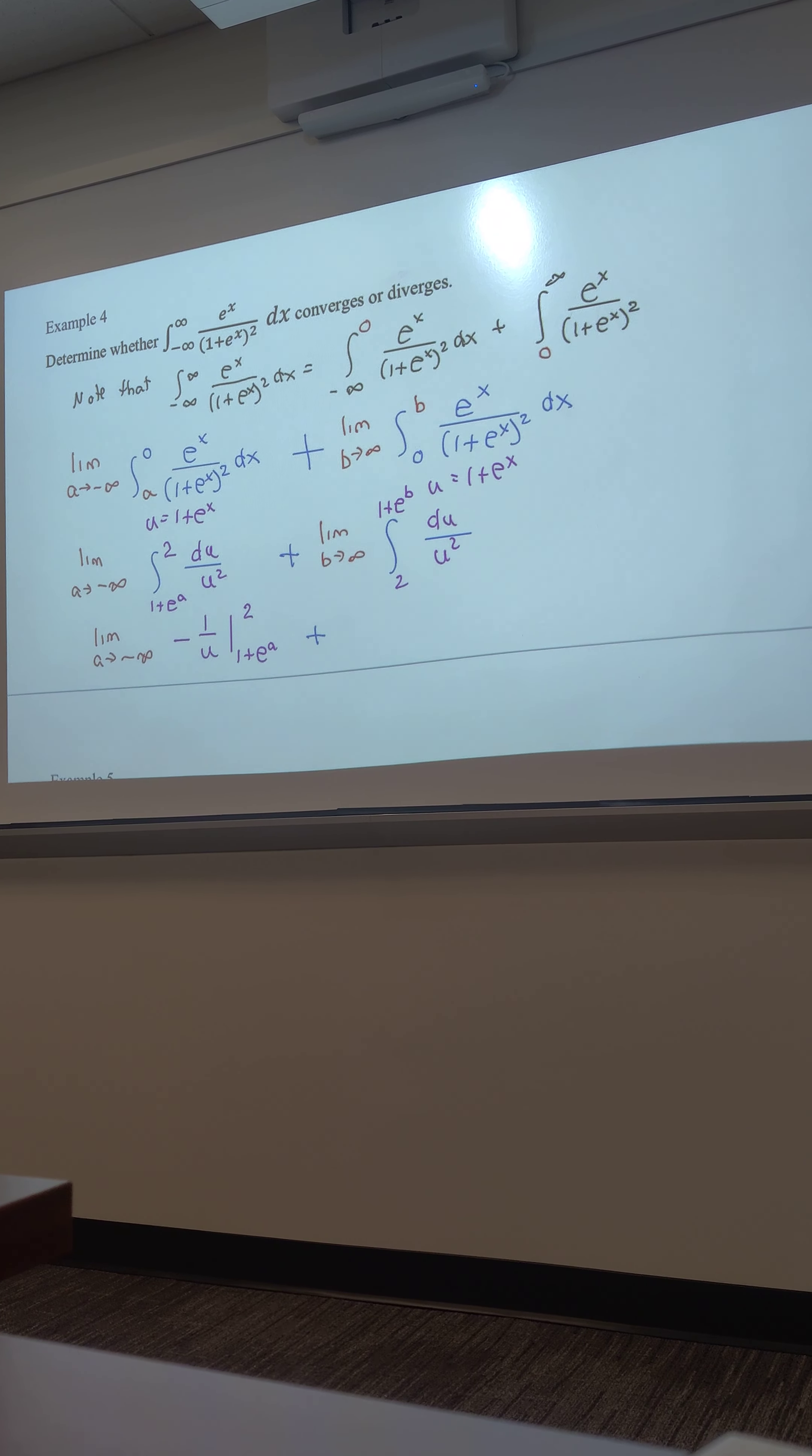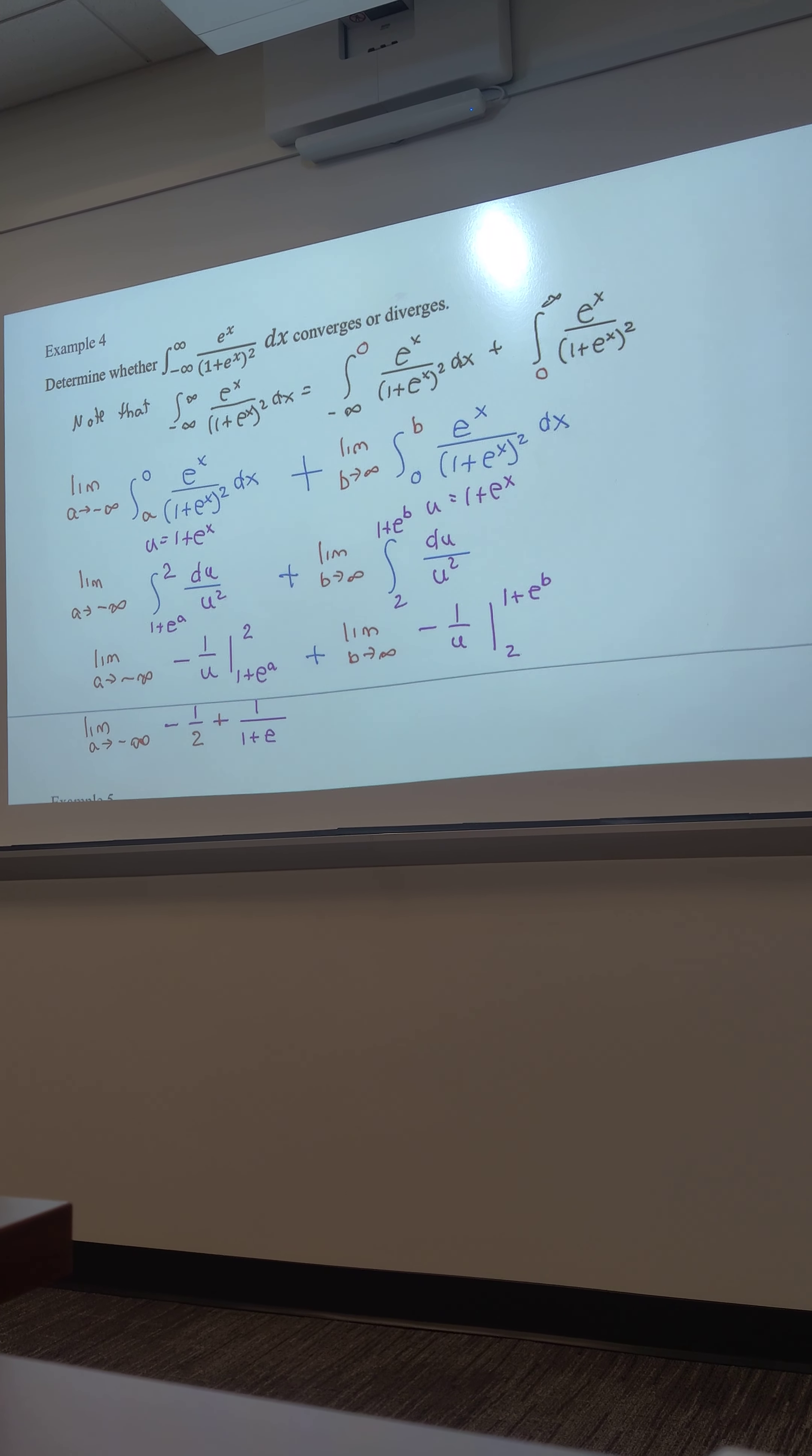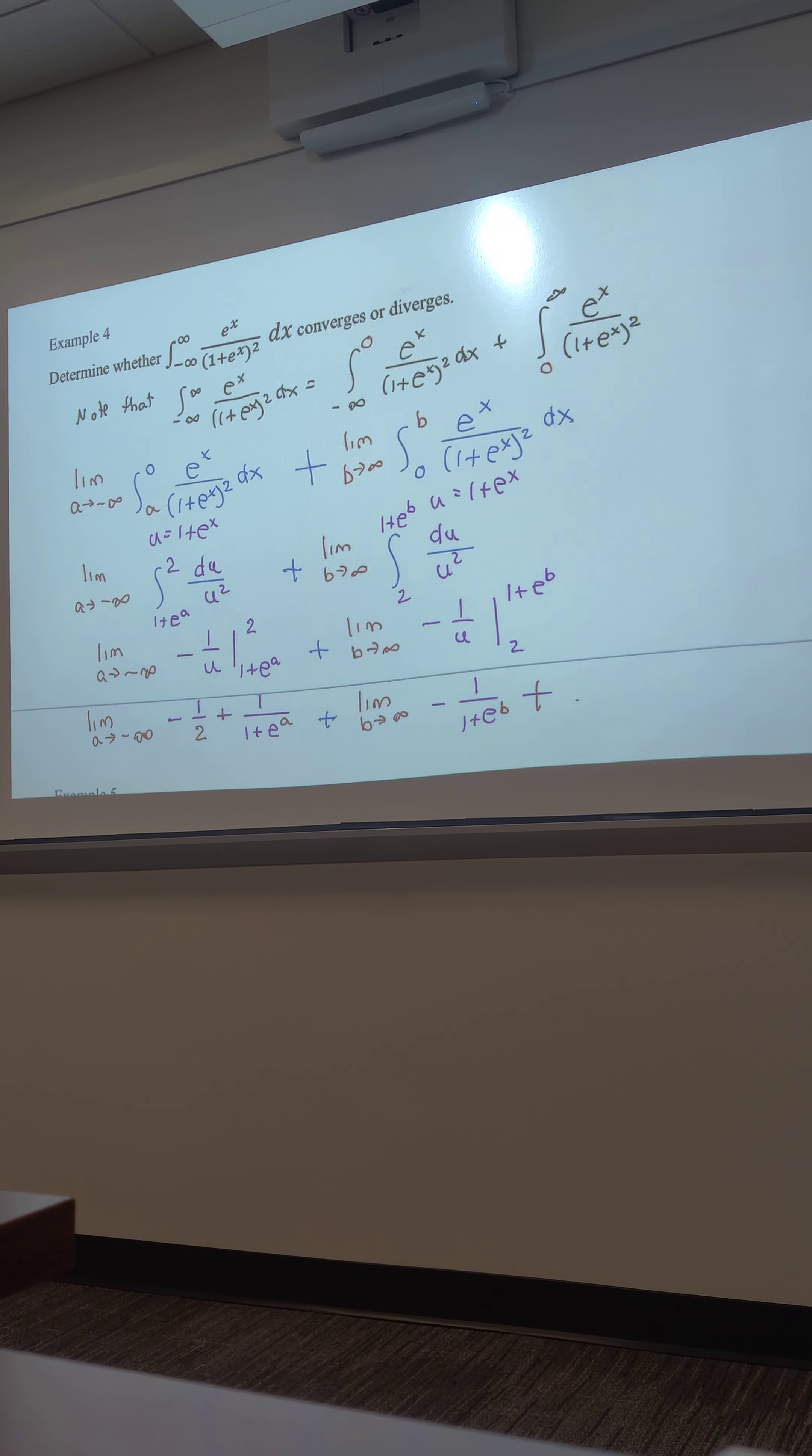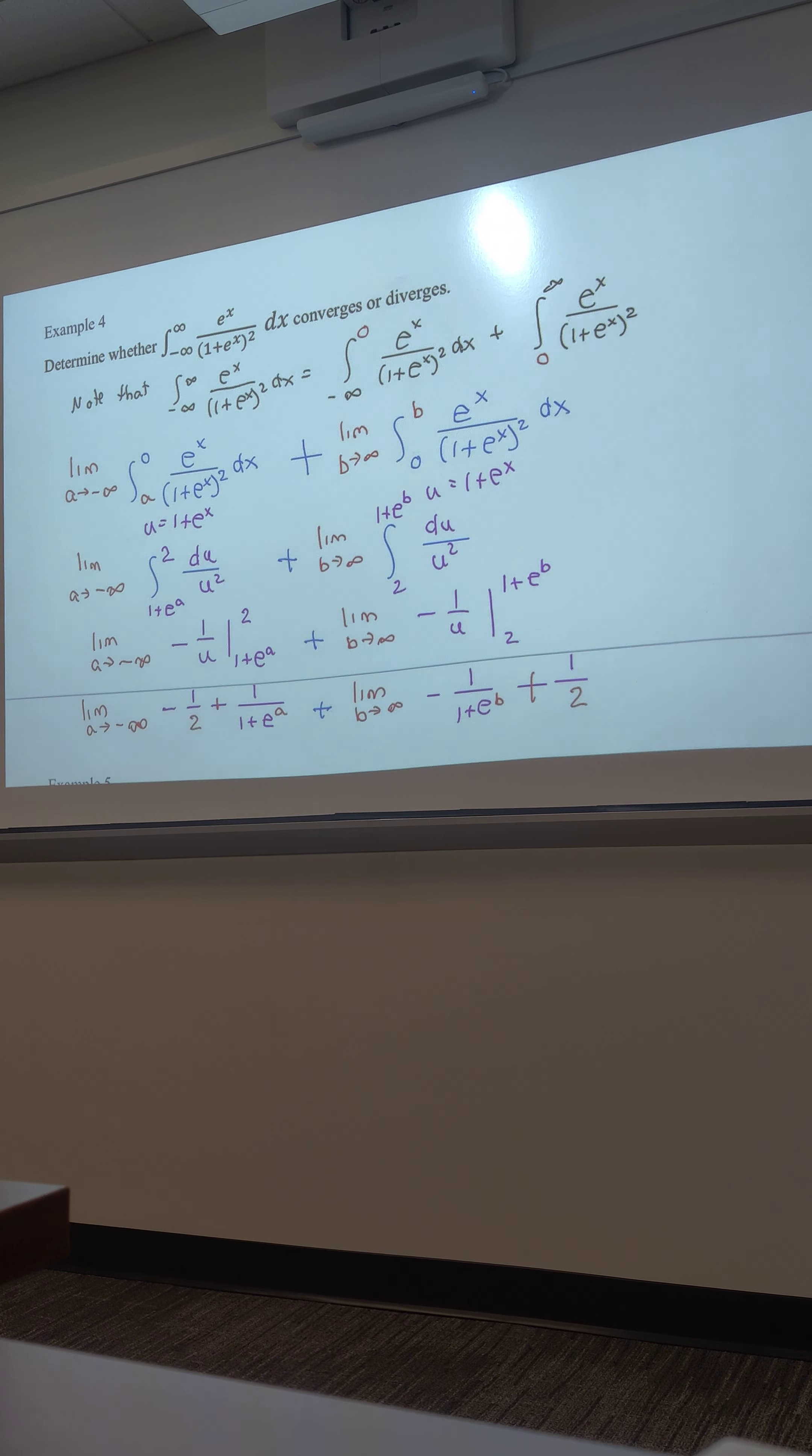Limit as a goes to negative infinity of negative 1 over u, evaluated from 1 plus e to the a to 2. b is going to infinity in the second integral. I'm still going to call it negative 1 over u, but this is going from 2 to 1 plus e to the b. I can't believe I did both of them together. This is just fun. First, I get a negative 1 over 2 minus a negative, so plus 1 over 1 plus e to the a. I'm going to start with a negative 1 over 1 plus e to the b minus a negative 1 over 2. Do we combine them so that the 1 has canceled? Well, no.